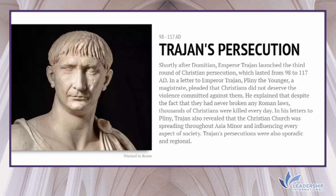Shortly after Domitian, Emperor Trajan launched the third round of Christian persecutions, which lasted from 98 to 117 AD. In a letter to Emperor Trajan, Pliny the Younger, a magistrate, pleaded that Christians did not deserve the violence committed against them, explaining that thousands of Christians were killed every day despite never having broken any Roman laws. Trajan's reply revealed that the Christian church was spreading throughout Asia Minor and influencing every aspect of society. These persecutions were also sporadic and regional.